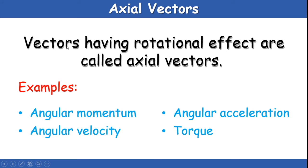One more type of vector based on effect is axial vectors. Vectors having a rotational effect are called axial vectors. Examples of axial vectors are angular momentum, angular velocity, angular acceleration, and torque. The effect of angular momentum causes a rotational change in a body; hence it is called an axial vector. The same applies to all other examples.